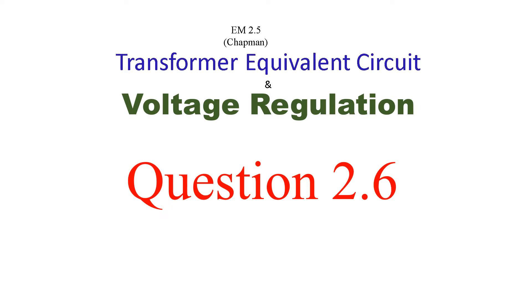Bismillahirrahmanirrahim. This video is again on the request of a student. The chapter here is the transformer equivalent circuit and voltage regulation from Mr. Chapman's book, articles 2.5 and 2.7. I will be solving question number 2.6 in the chapter questions. Although his request is for question 2.7 from the 5th edition, I have the 4th edition book, so it is the same question except for a variation in the values. So if you understand this, I am sure you will be able to solve that question as well.